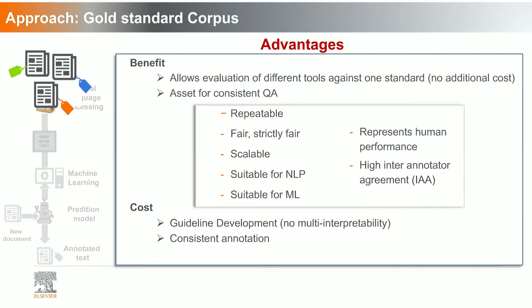The benefits of using gold standards: it allows a standard tool to compare different prediction models without additional cost. You can use the same gold standard repeatedly to validate the quality of different tools — you're always comparing apples with apples. It can scale easily and is suitable for both NLP and machine learning approaches. It also represents human performance, capturing the variance of human subjects and their subjective knowledge, which we use to evaluate the quality of prediction models.